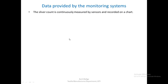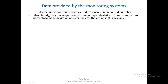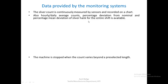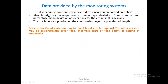In the case of sliver count, it is continuously measured by sensors and recorded on a chart. There is also an hourly or daily average count check, recording the percentage deviation from nominal and the percentage mean deviation of sliver hank for the entire shift. The machine is stopped when the count varies beyond the preselected limit. Reasons for count variation include creel breaks, roller lapping, missing or extra sliver feed, incorrect draft or feed count, or incorrect setting of the auto leveler.